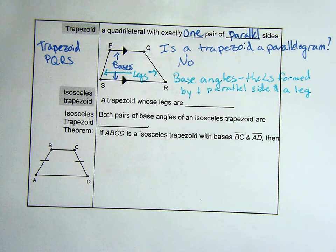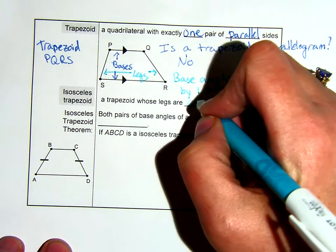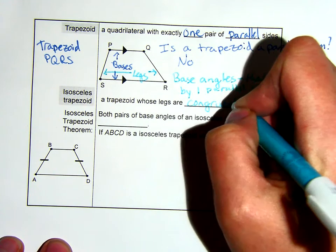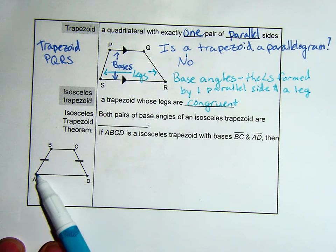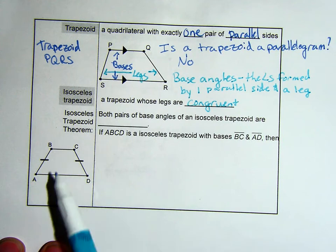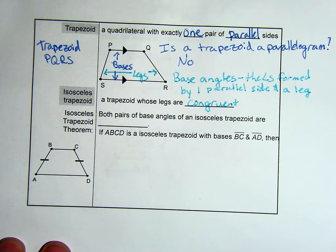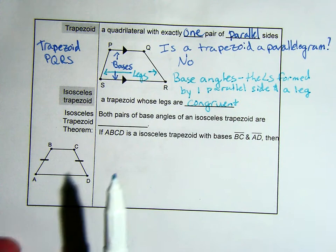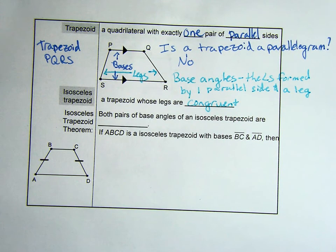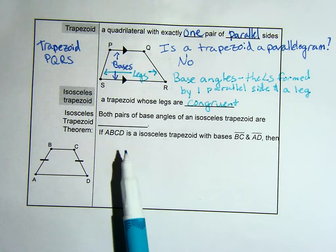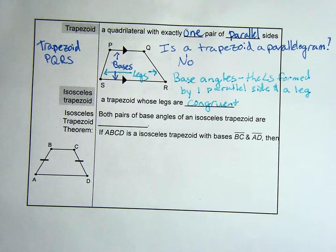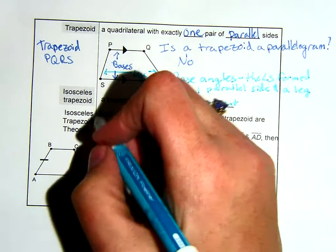Now we will not be using the term base angle until we do isosceles trapezoids, which are next. An isosceles trapezoid is a trapezoid whose legs are congruent. An example of one is below. Trapezoid ABCD is an isosceles trapezoid because these two sides are congruent. We have some properties besides our one set of sides being parallel for isosceles trapezoids. The property is both pairs of base angles of an isosceles trapezoid are congruent.